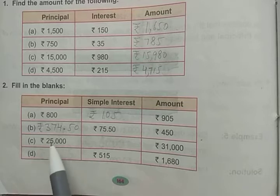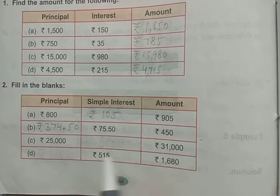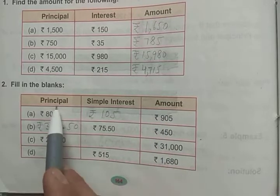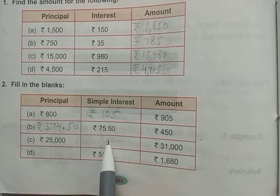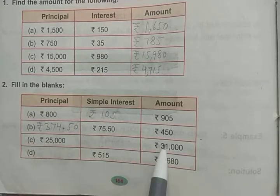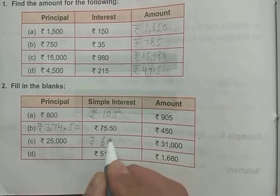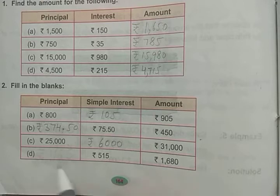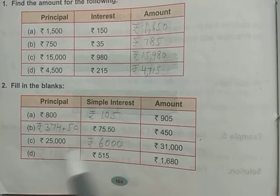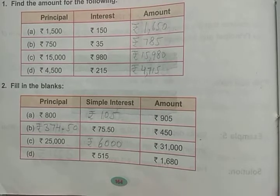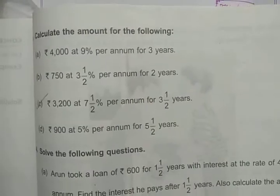You can verify by adding: 374.50 + 75.50 = 450 rupees. Similarly, amount is given and principal is given, so: 31,000 − 25,000 = 6,000 rupees simple interest. In the next part, subtract simple interest from amount to get the principal.